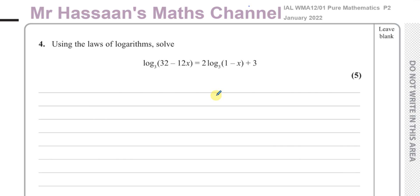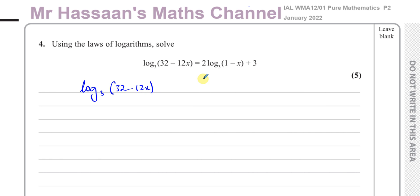We want to solve this log equation using the laws of logarithms. There are a few different methods that can be used. What I'm going to do is bring all the log terms on one side of the equation. So I have log to the base 3 of 32 minus 12x, minus 2 times log to the base 3 of 1 minus x, equals 2. I subtracted that term from both sides, so I end up with just log terms on the left side.